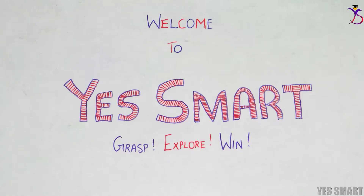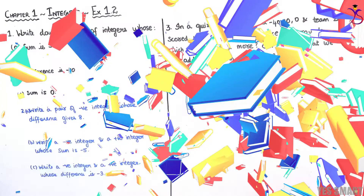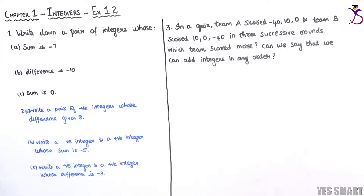Hello everybody, welcome to Smart Grasp Explore and Win. Greetings for the day. Let's get started with today's topic: Chapter 1 Integers, Exercise 1.2. The first sum: write down a pair of integers whose sum is minus 7.